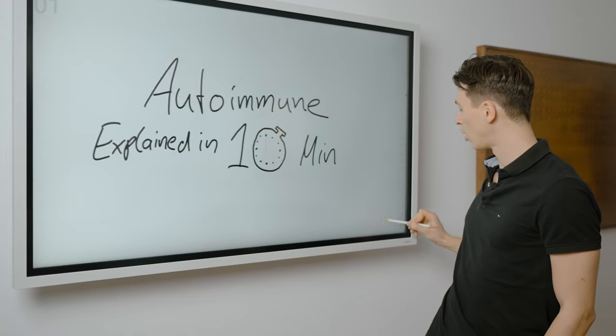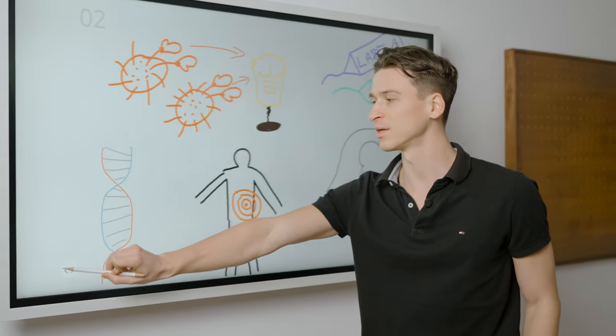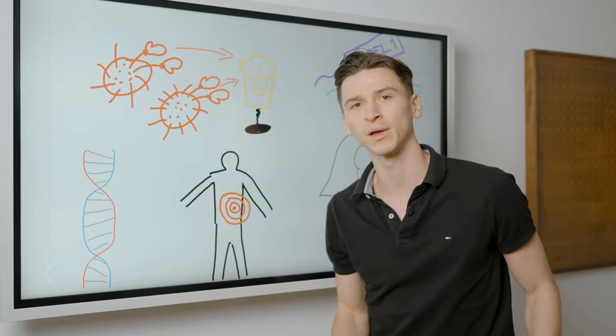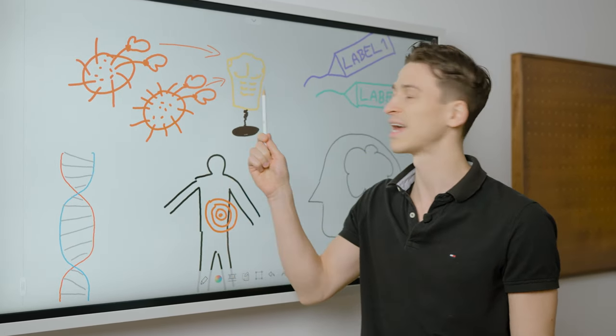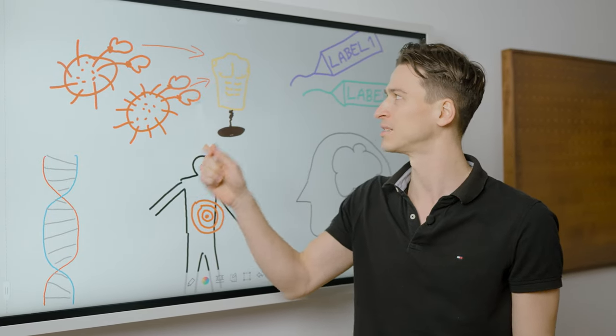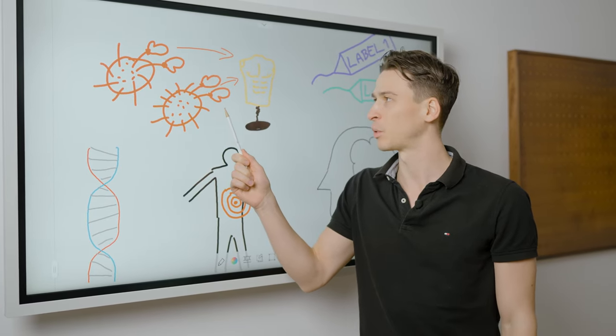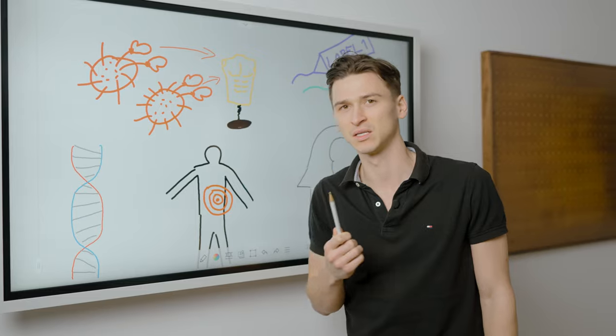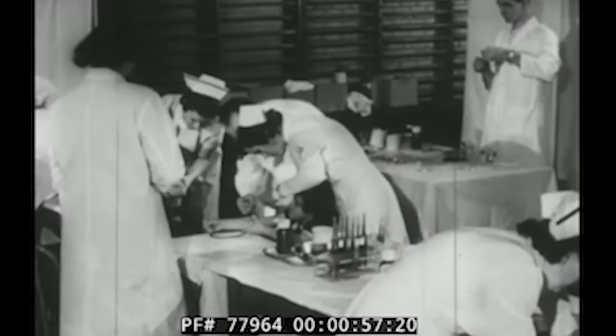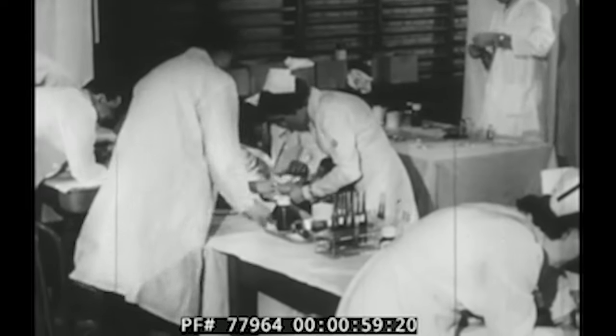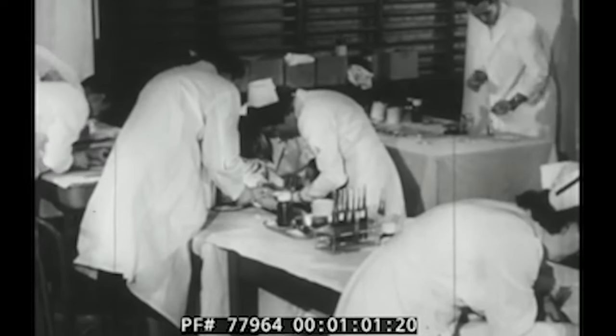When you get an autoimmune disease, what they tell you right away is basically that your own immune system is attacking your body. This is one of the theories that they invented since the 1960s, 1970s when women filed into the doctor's offices with mysterious symptoms, but they didn't know what to do about it.